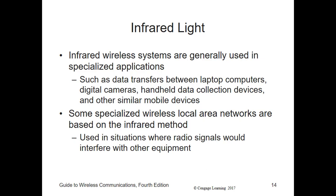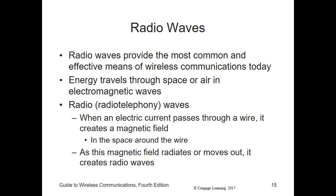Is there a wave in the electromagnetic spectrum that does not have the distance and line-of-sight limitations of infrared? Yes — those are radio waves. The secondary means of transmitting a wireless signal is by using radio waves, sometimes called radio telephony. Radio waves provide the most common and effective means of wireless communication today.